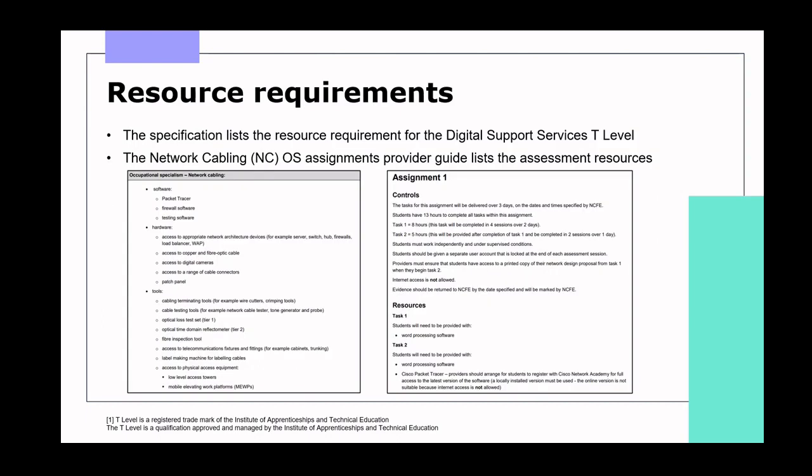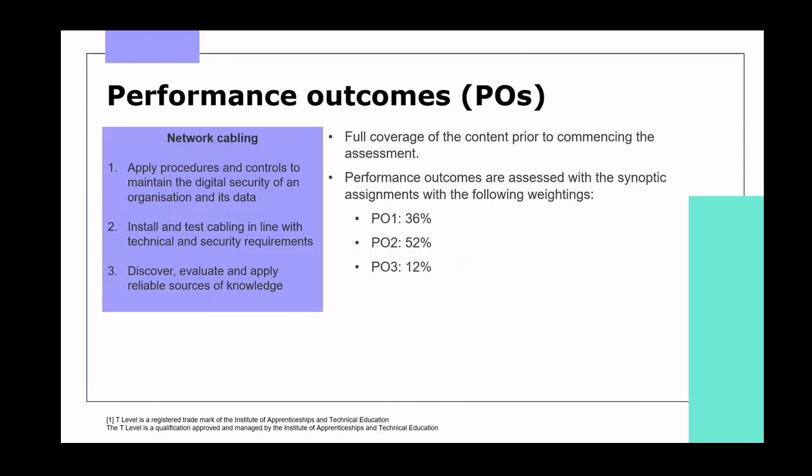Another key area is the resource requirements section in the specification, which states the resources needed to deliver the core and occupational specialism components. For live assessments, a provider guide will list specific resources needed for each assignment, but should remain relatively similar to the sample version on QualHub. The network cabling assignments assess three performance outcomes, with a larger weighting of 52% given to performance outcome 2 regarding installing and testing cables, as that's a highly important aspect of a network cabling role.